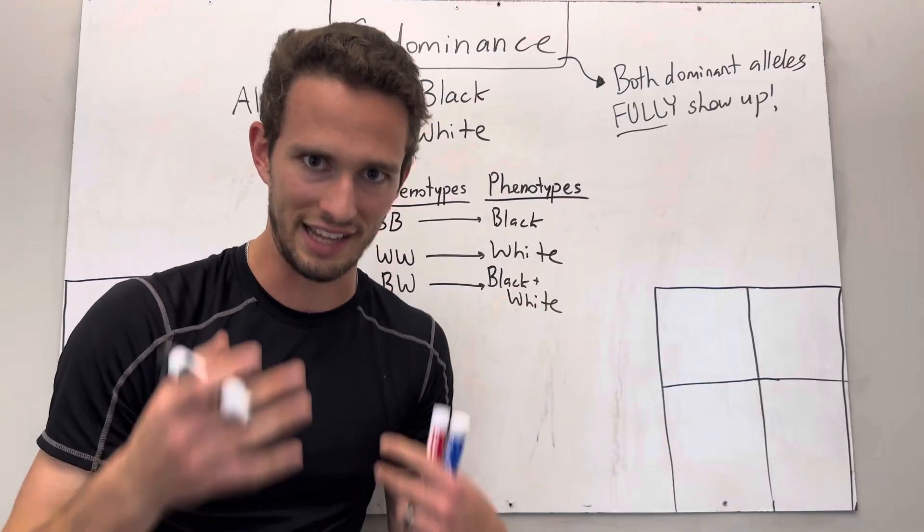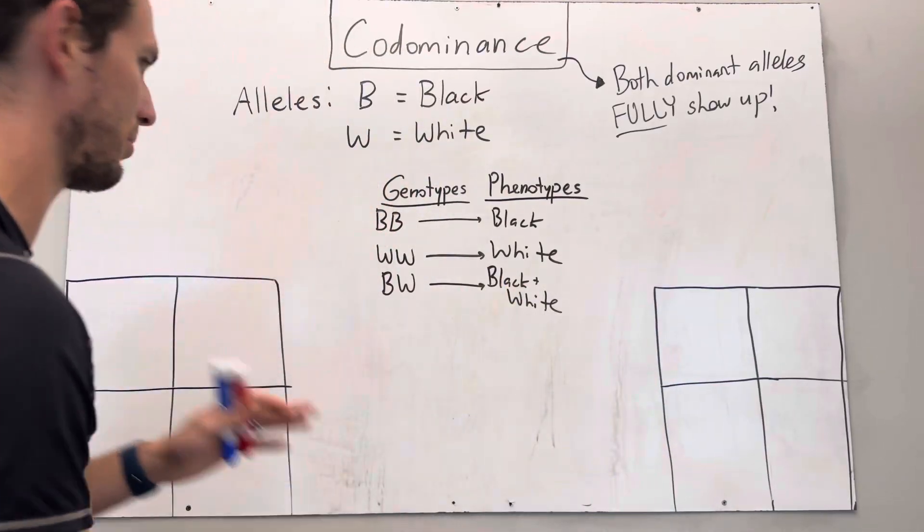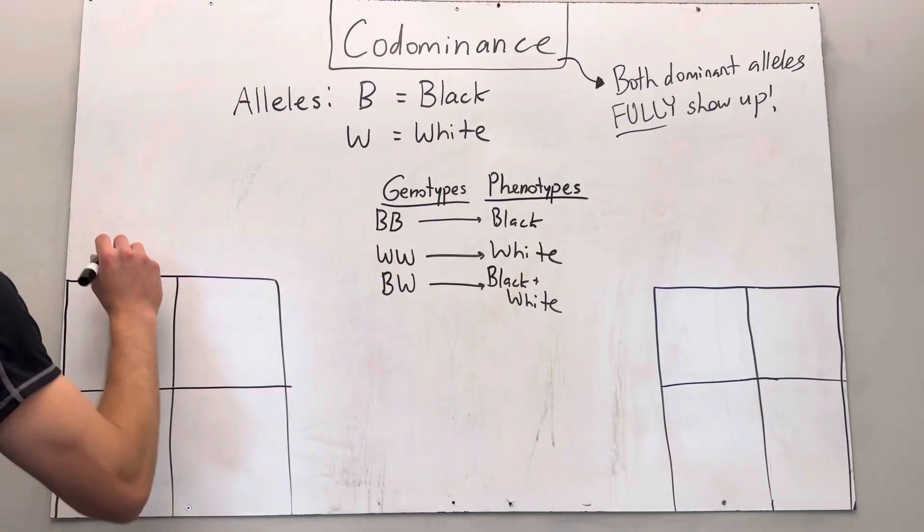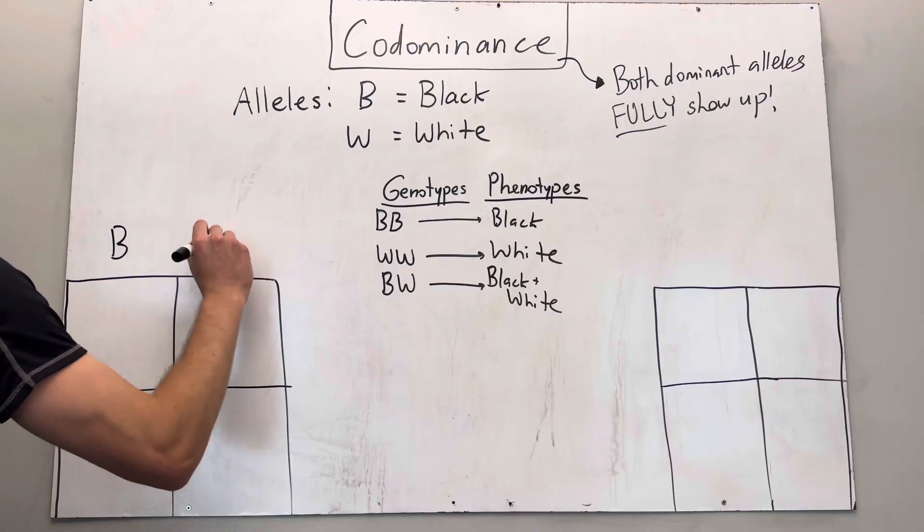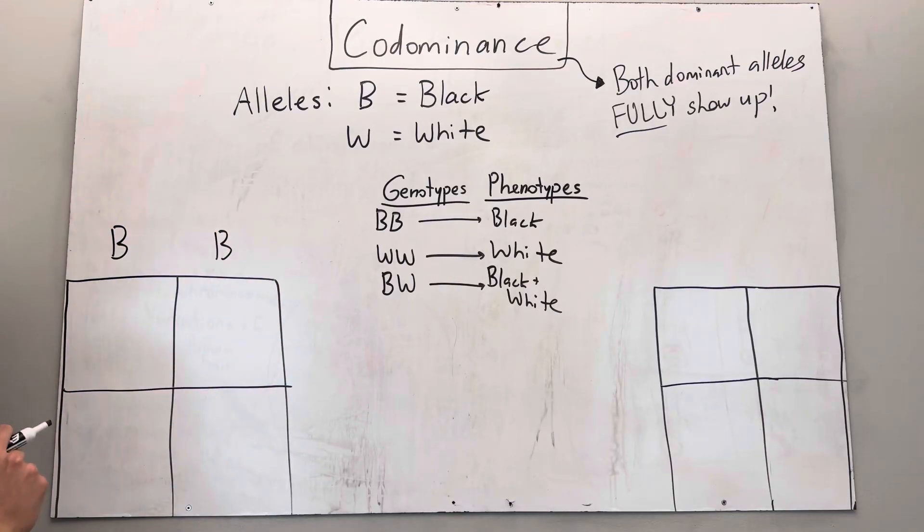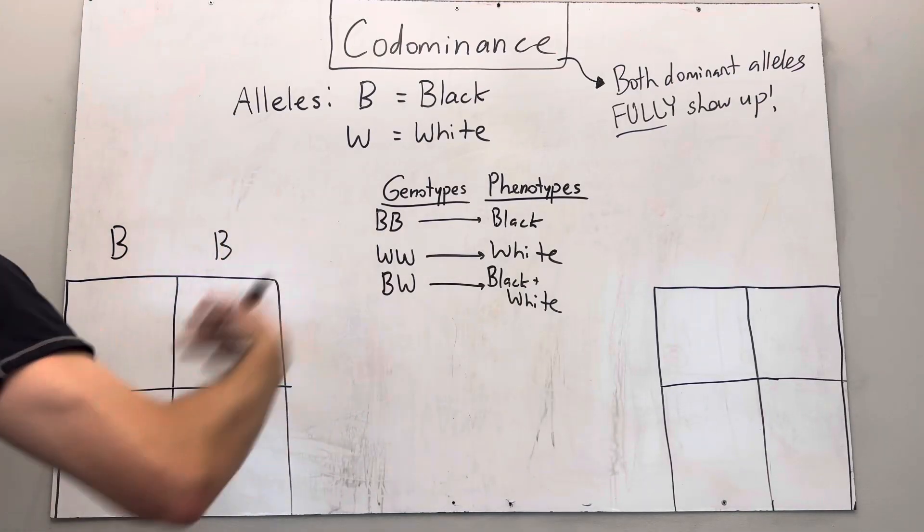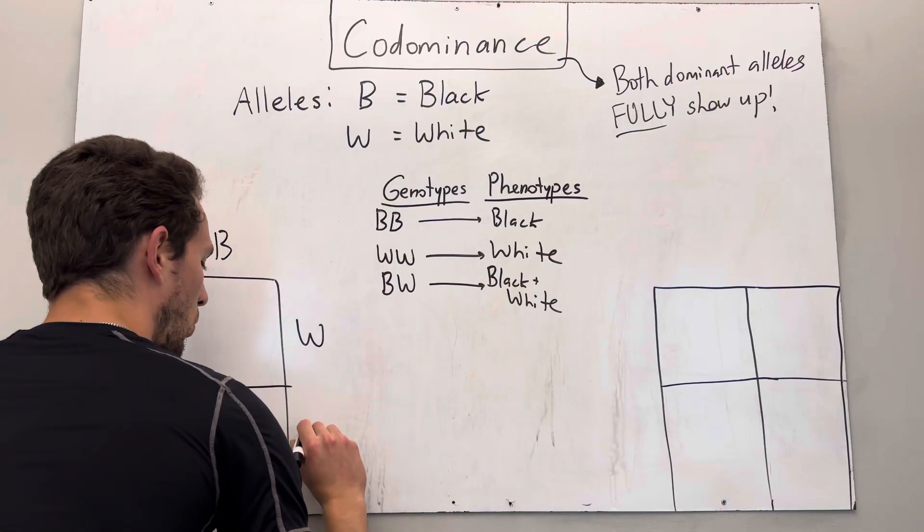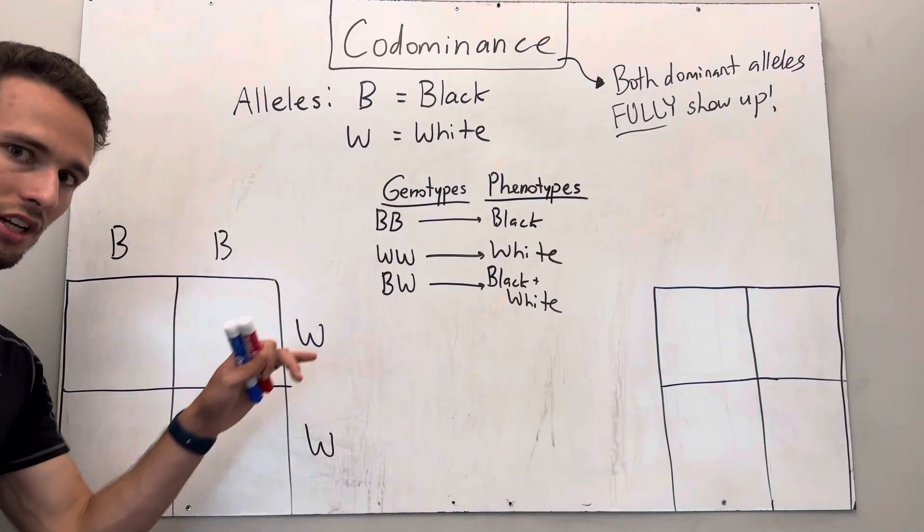Let's take a couple examples with Punnett squares. Let's say mom is big B big B, so she's homozygous dominant. She obviously is showing black. Let's say dad is a white cat, big W big W.